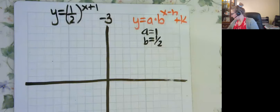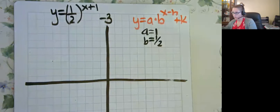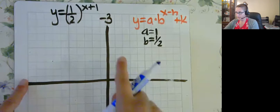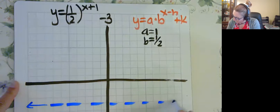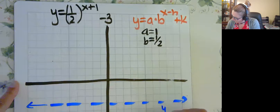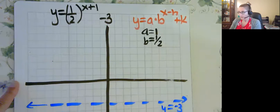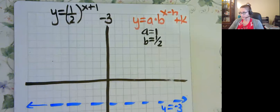So if I'm going to graph this to start with, I'm going to have an asymptote at y equal negative 3. So y equal negative 3.